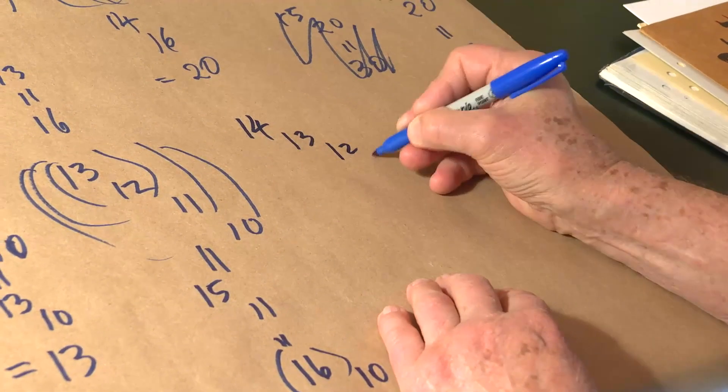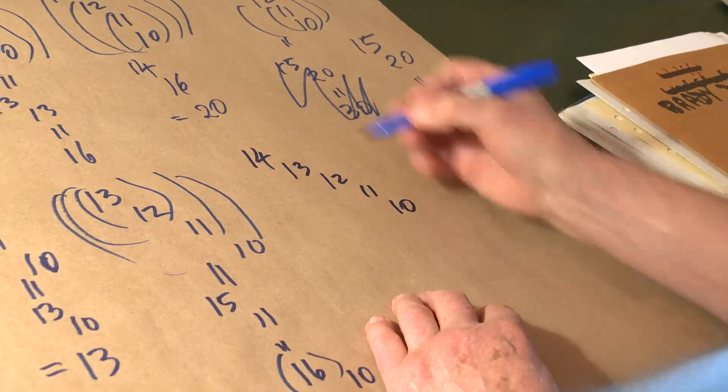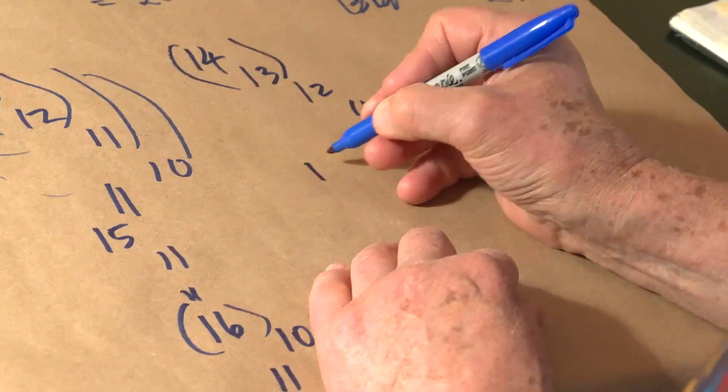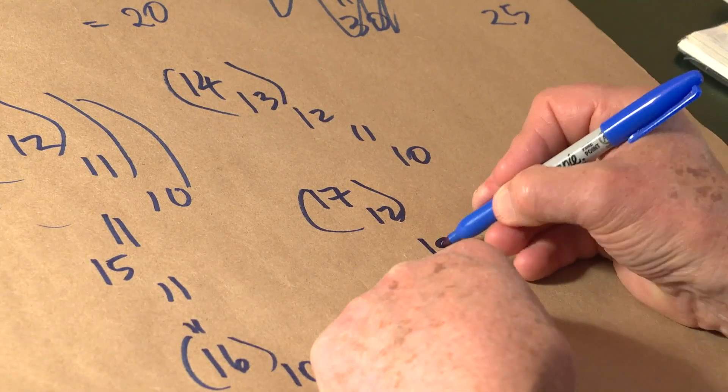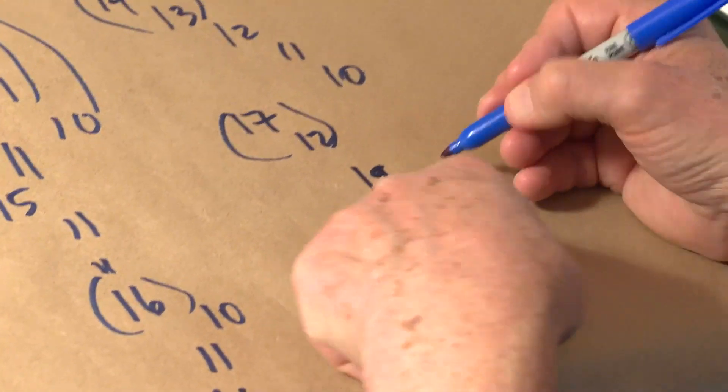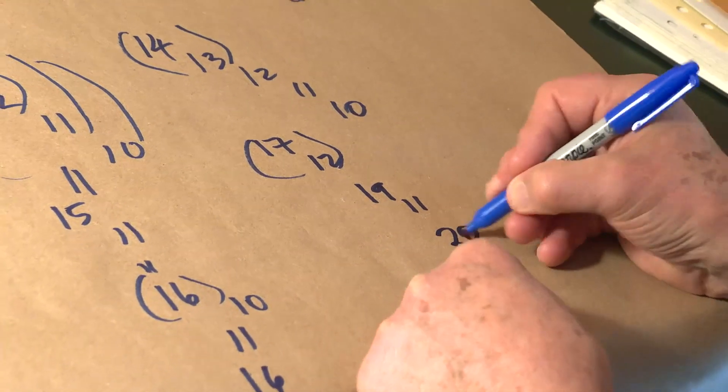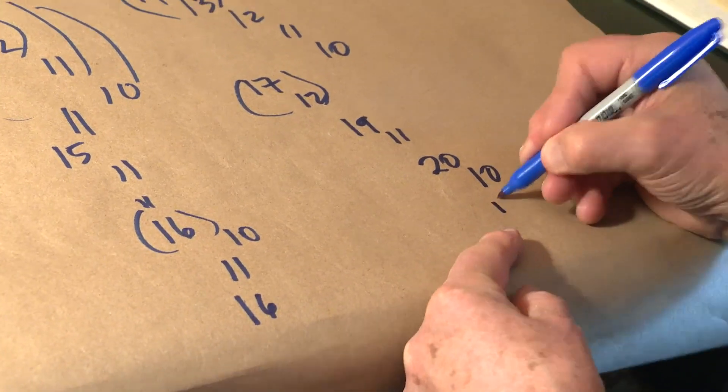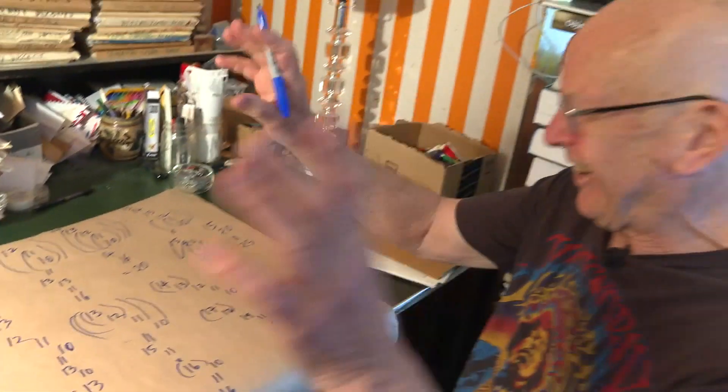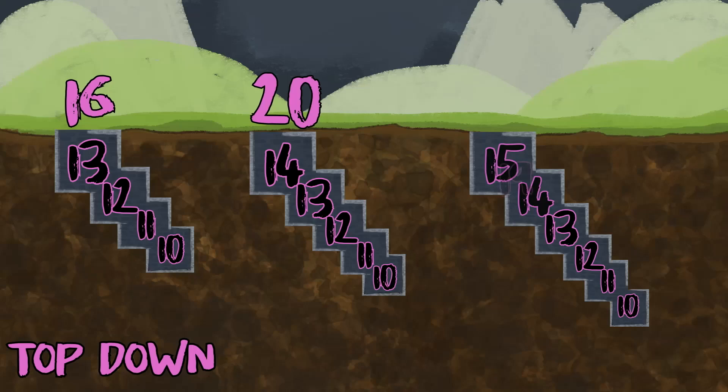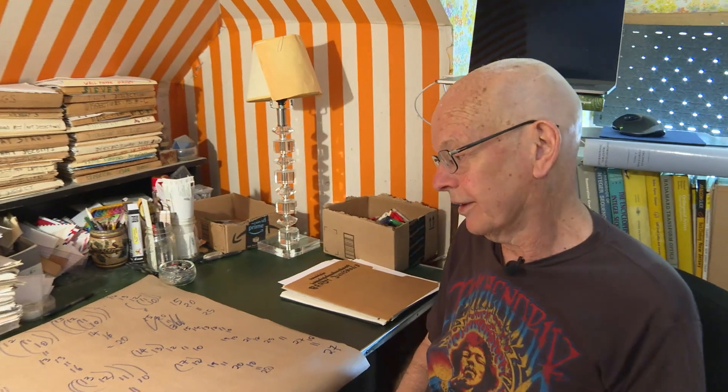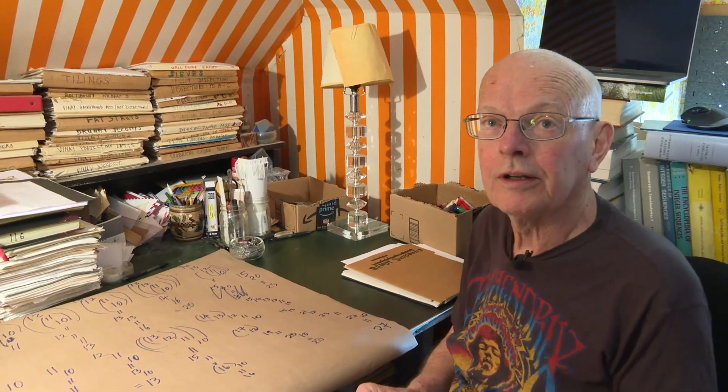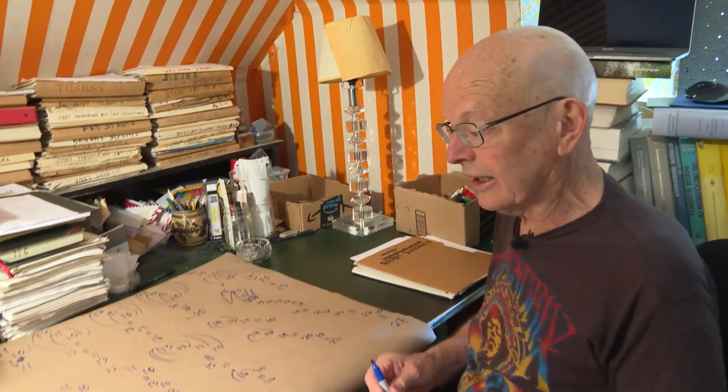14, 13, 12, 11, 10. 14, 13 is 17. 17, 12 is 19. 19 sub 11 is equal to 20. 20 sub 10 is 20. Holy cow. All right, we'll go one more step. It's breaking from the pack now. Yeah, we've got a different sequence. And this again, presumably the same thing will happen here? Yes, exactly the same.